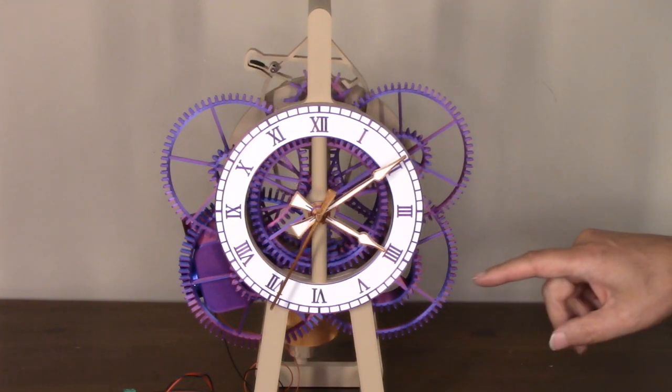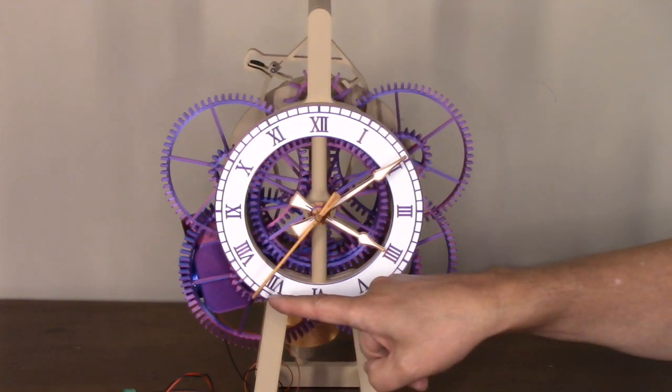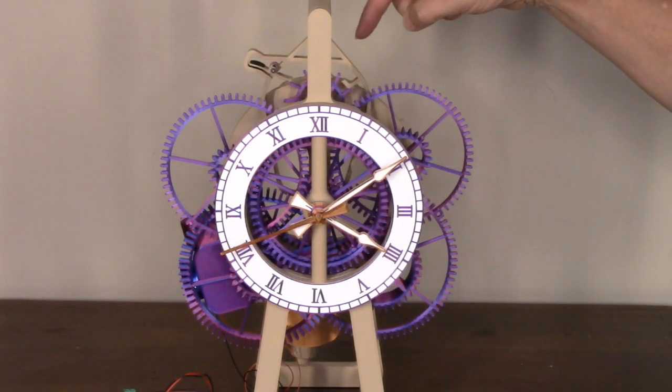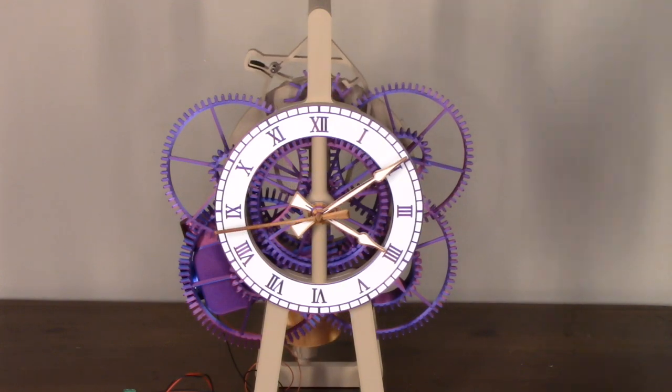The whole point of the Coupe Perdue is you can see the second hand moves once a second even though the pendulum has a half second beat.